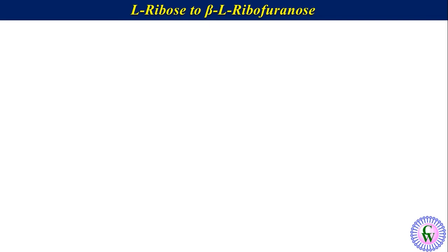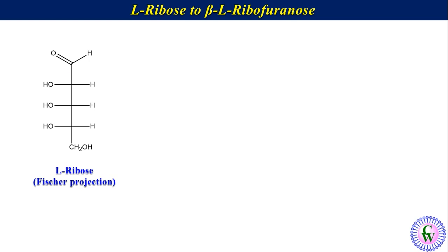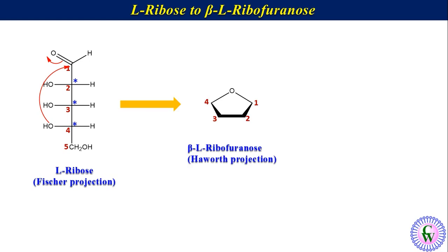Let's have one more example in which we have to convert the Fischer projection of L-ribose to beta-L-ribofuranose. The Fischer projection of L-ribose can be drawn like this. Label the carbons as 1, 2, 3, 4 and 5. There are three chiral centers: C2, C3 and C4 in Fischer projection. The OH of C4 adds to the aldehyde to produce ribofuranose. The skeleton of ribofuranose can be drawn like this. Let's first consider C2 and C3 — in Fischer projection, the OH on both these carbons is on the left, so in Haworth the OH groups on C2 and C3 will be up.